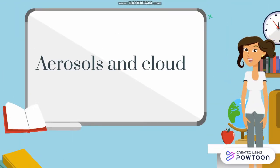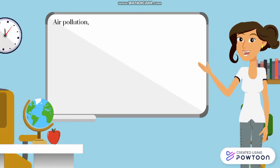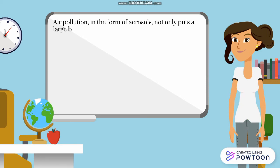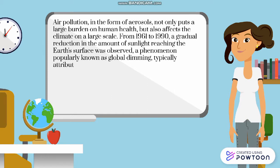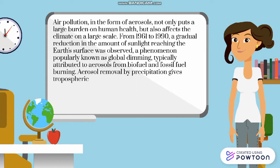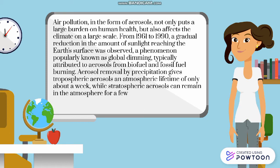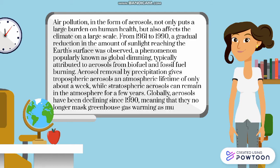Next is aerosols and clouds. Air pollution in the form of aerosols not only puts a large burden on human health, but also affects the climate on a large scale. From 1961 to 1990, a gradual reduction in the amount of sunlight reaching the Earth's surface was observed, a phenomenon properly known as global dimming. Typically attributed to aerosols from biofuel and fossil fuel burning, aerosol removal by precipitation gives tropospheric aerosols an atmospheric lifetime of only about a week, while stratospheric aerosols can remain in the atmosphere for a few years. Globally, aerosols have been declining since 1990, meaning that they no longer mask greenhouse gas warming as much as now.